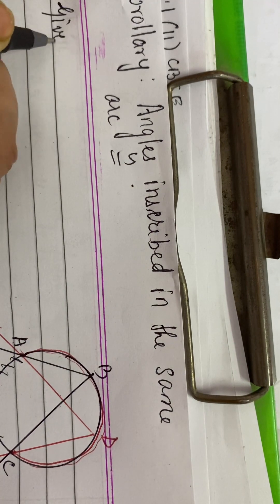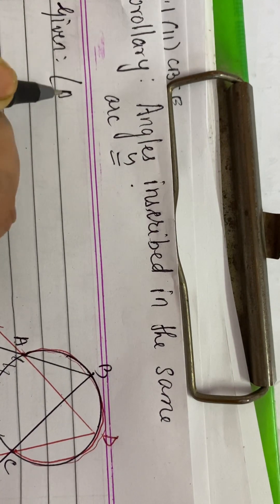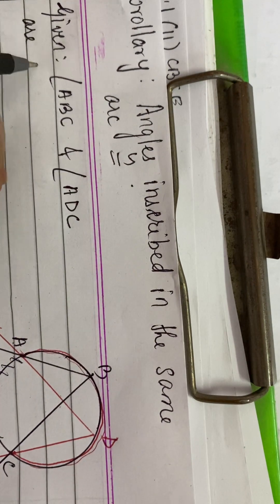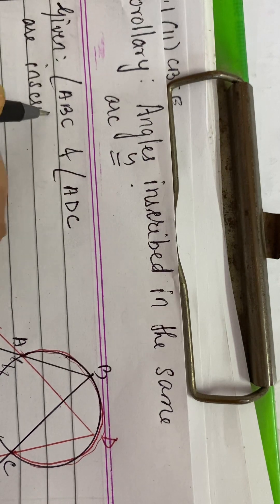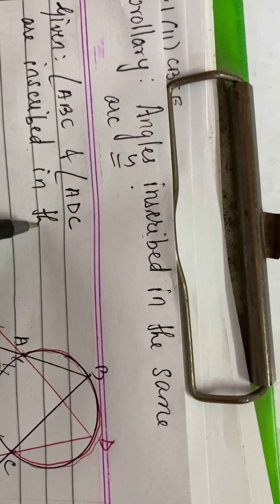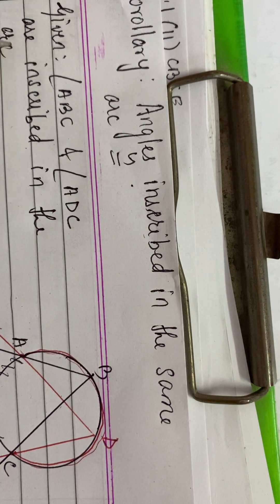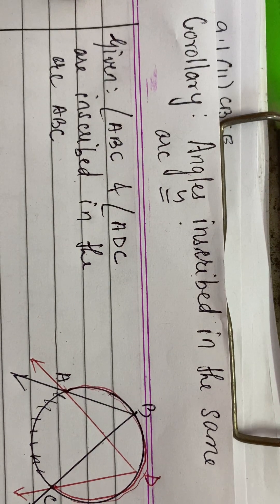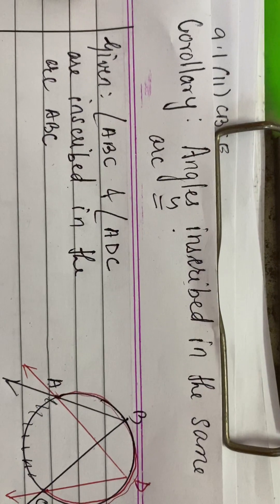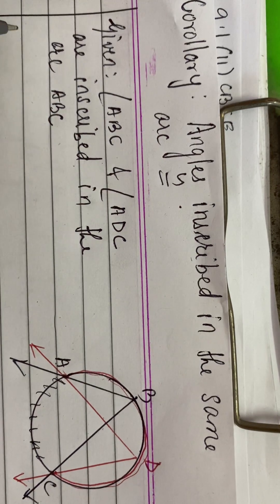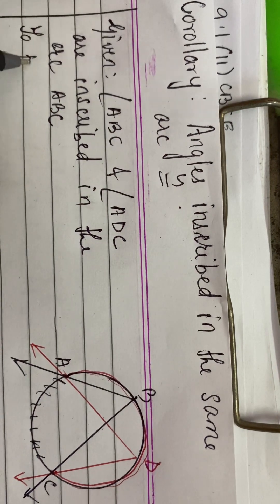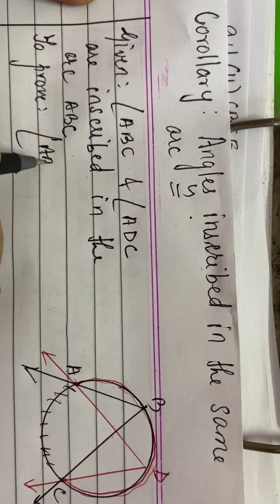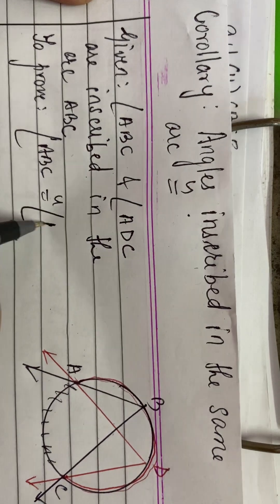In the given, we write: angle A, B, C and angle A, D, C are inscribed in arc A, B, C — or you can also write A, D, C, whichever you feel comfortable. To prove: angle A, B, C is congruent to angle A, D, C.